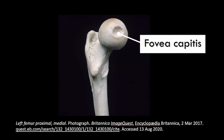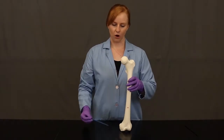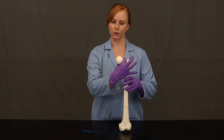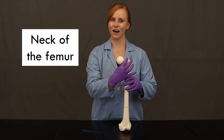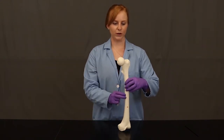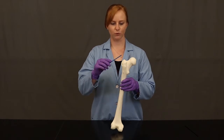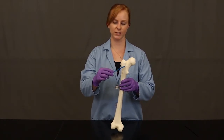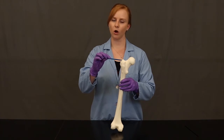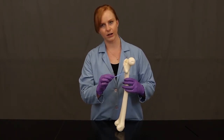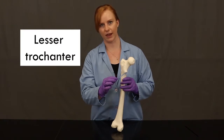Moving from that head, there's a narrower region right here that is the neck of the femur. And then we'll reach a couple of large rough projections — very large rough projections. This one is called the greater trochanter, and the smaller one right here is the lesser trochanter.